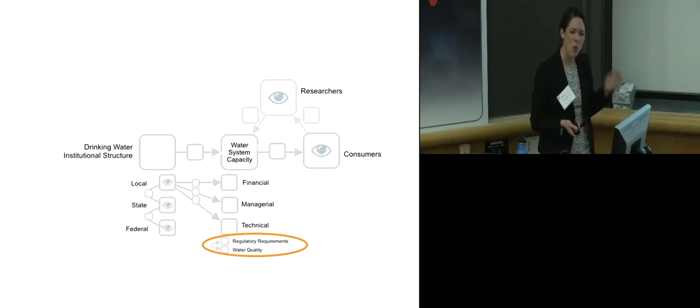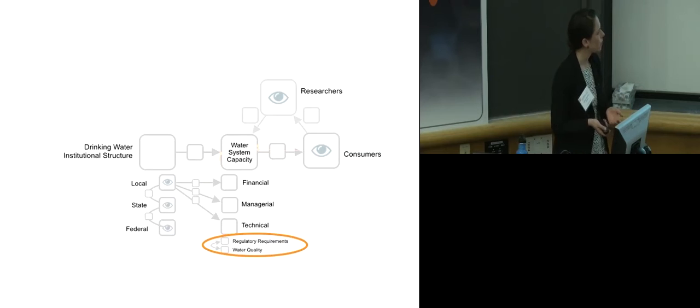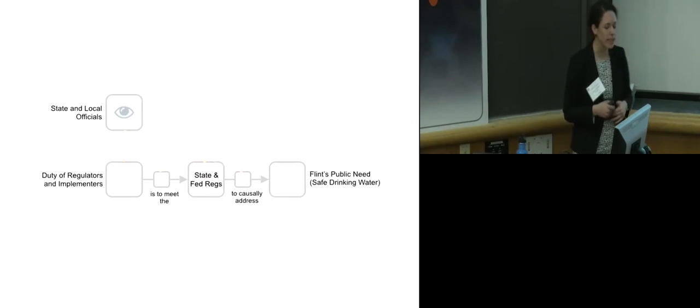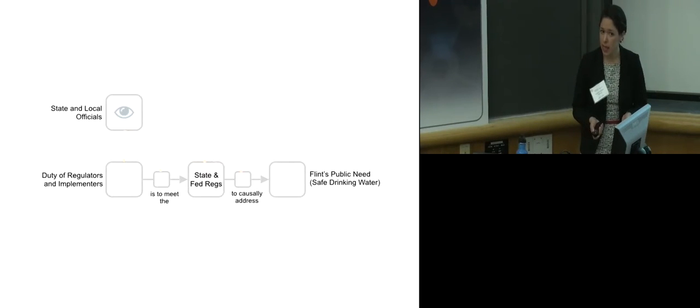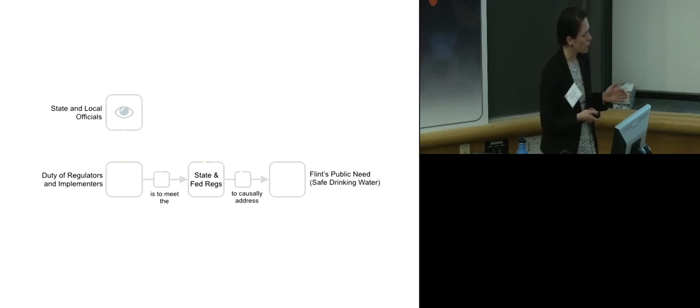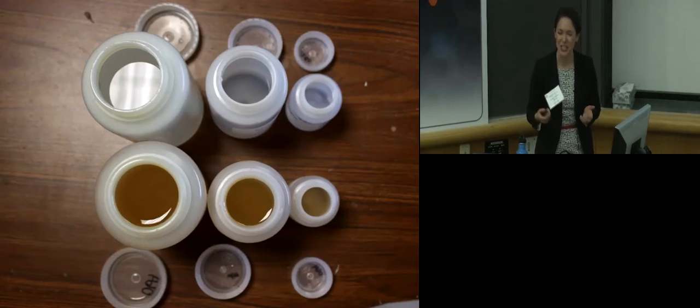I realized it's one distinction made by state and local regulators between the regulatory requirements and the water quality. And this proved the instrumental models. I realized that from the perspective of state and local regulators, it is their duty to meet the state and federal requirements to ensure the water quality of safe, the public needed net. But in this scenario, their perspective is not actually looking at the water quality. Instead, they're looking at water quality samples, a representation of the water quality.